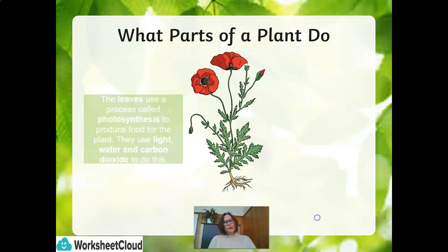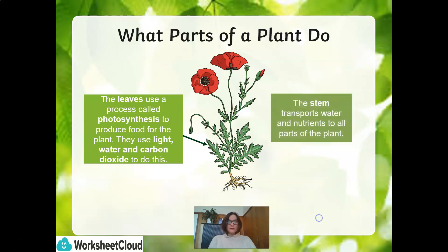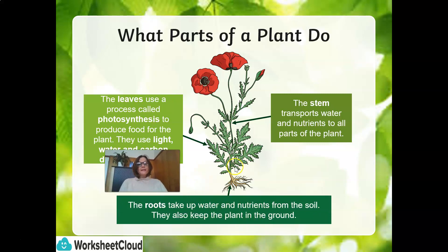What do parts of a plant do? Let's start with the leaves. The leaves use a process called photosynthesis to produce food for the plant. They use light, water, and carbon dioxide to do this. The stem transports the water and nutrients to all parts of the plant. The roots take up the water and nutrients from the soil. You can see the little root hairs — they also keep the plant in the ground, serving as an anchor.